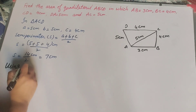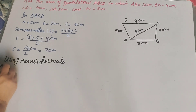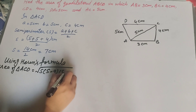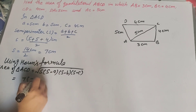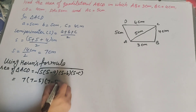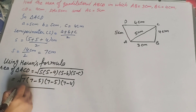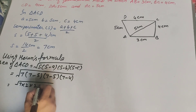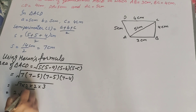Now we find the area of triangle ACD using Heron's formula: Area = √(s × (s−a) × (s−b) × (s−c)). Substituting: s = 7, s−a = 7−5 = 2, s−b = 7−5 = 2, s−c = 7−4 = 3. So Area = √(7 × 2 × 2 × 3) = 2√21.